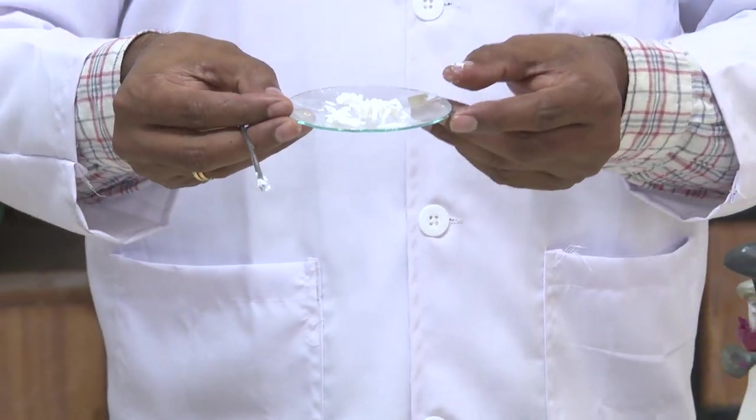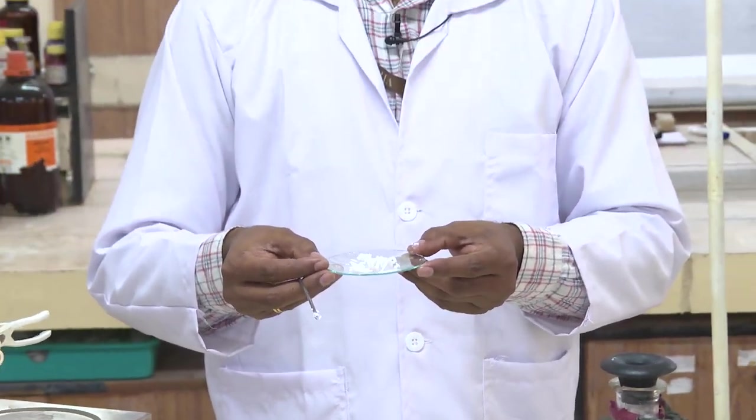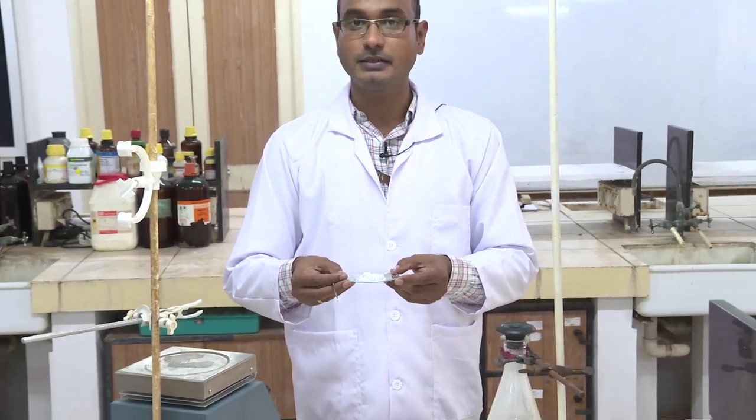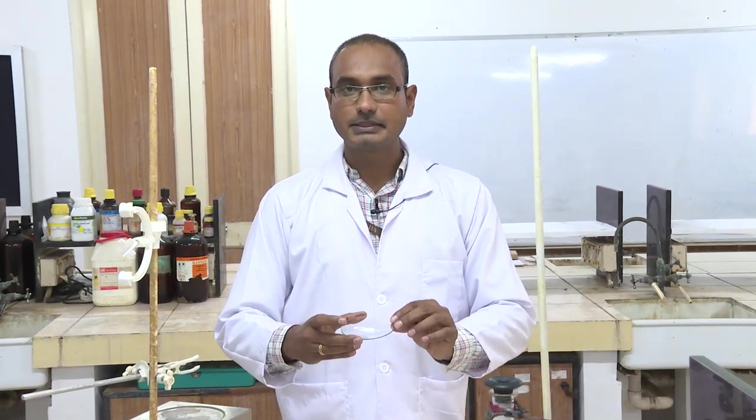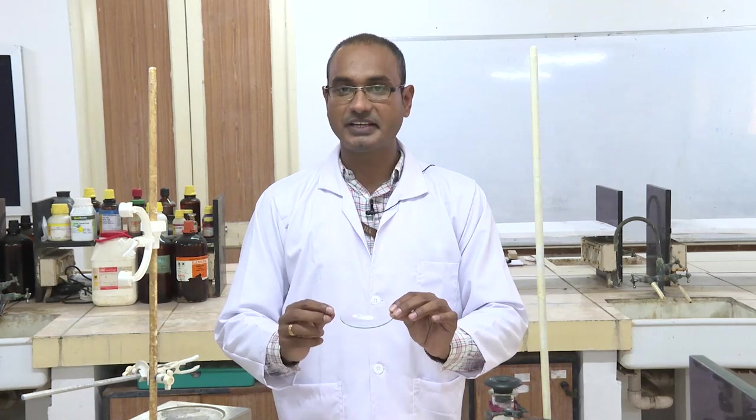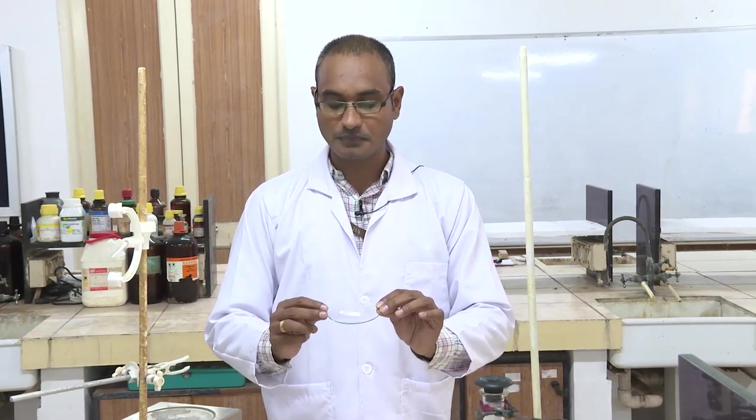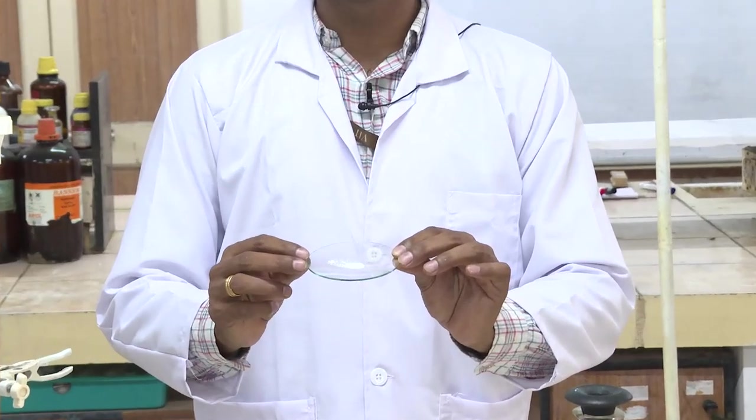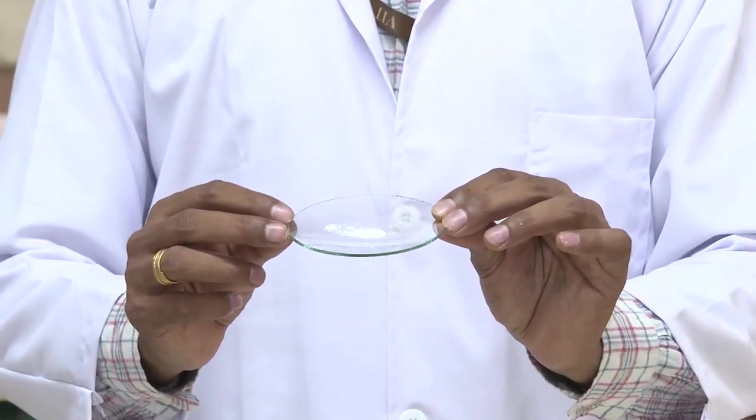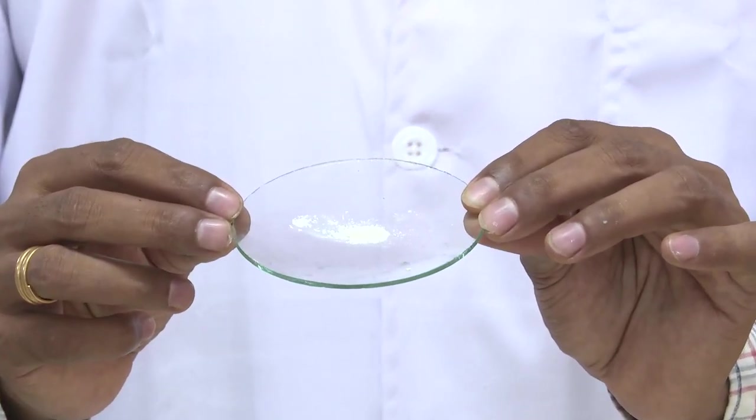Now what I am going to do, I am going to keep this material in hot air oven at 80 degrees centigrade for 5 hours. After 5 hours, I removed this petri dish from hot air oven. So actually after removing it will be hot, so after cooling only I have to touch with your fingers. Now you can see the material here.